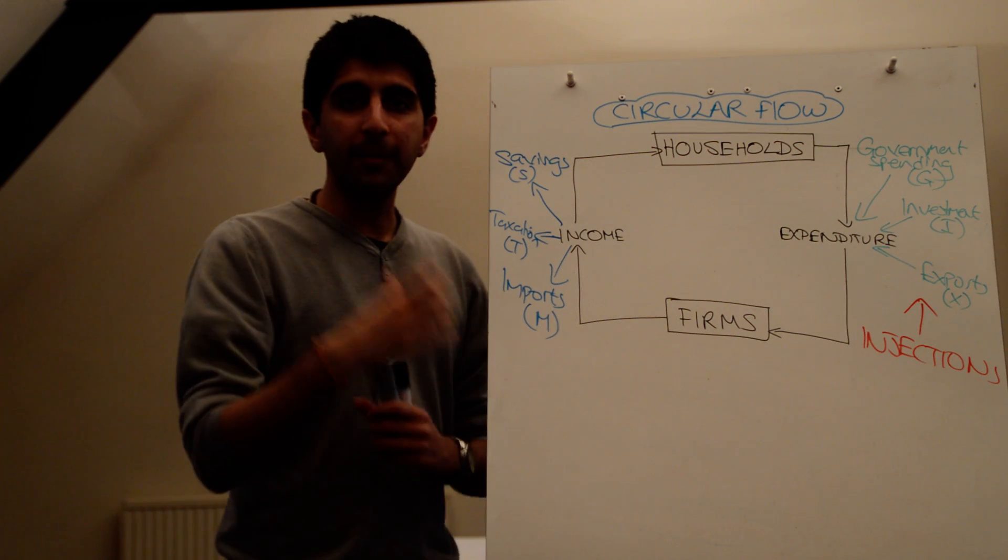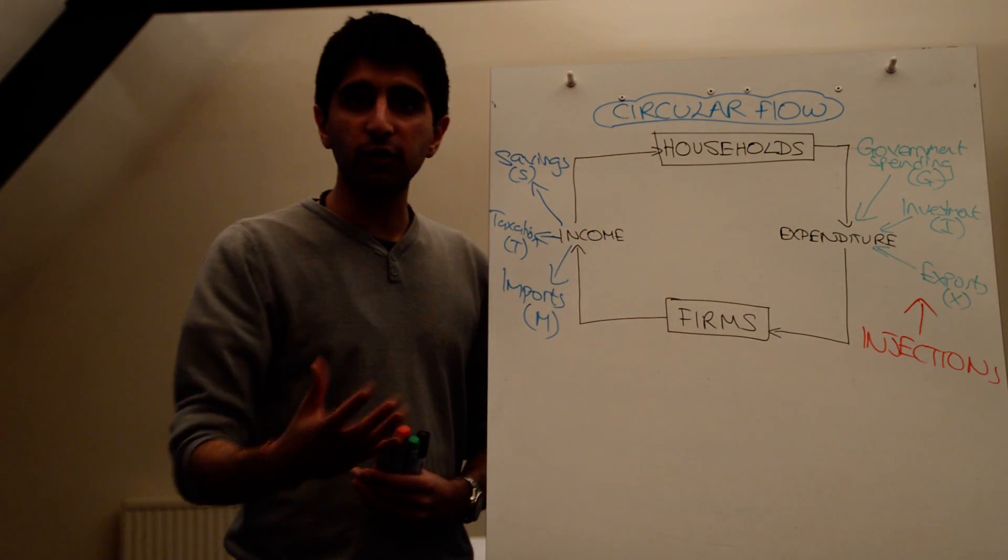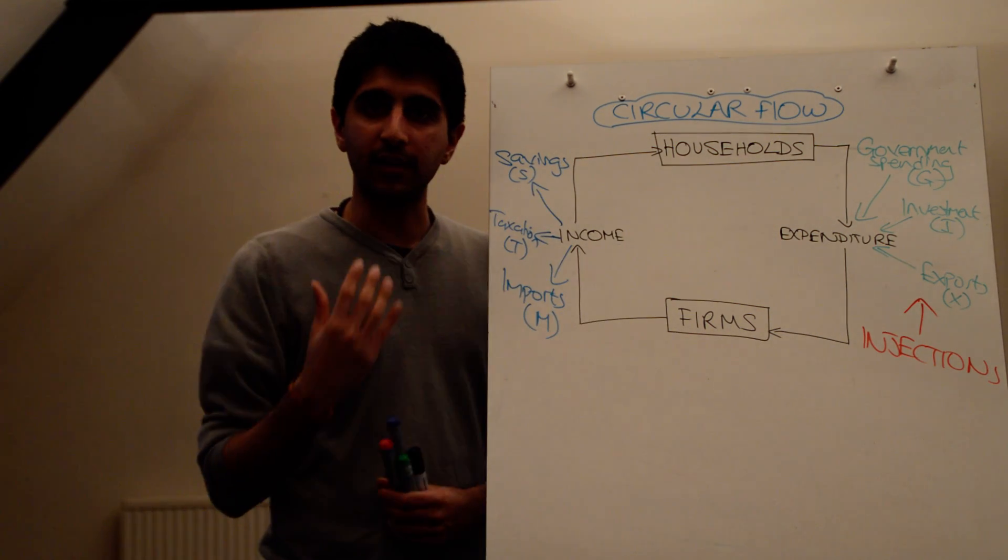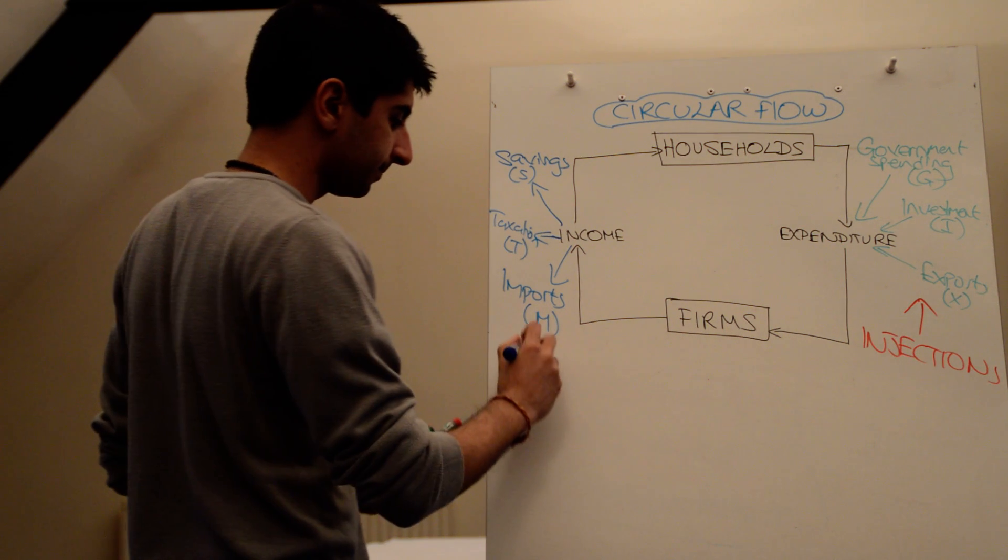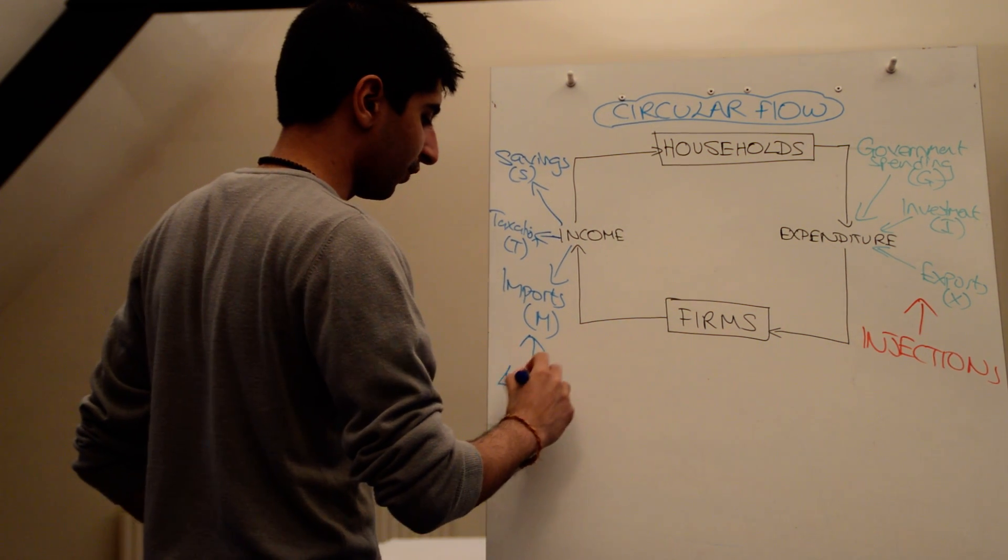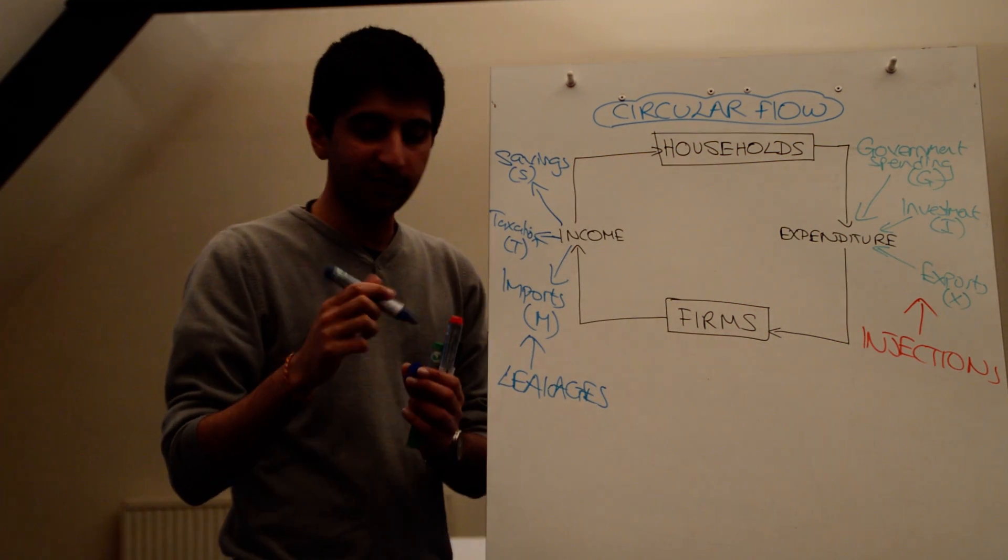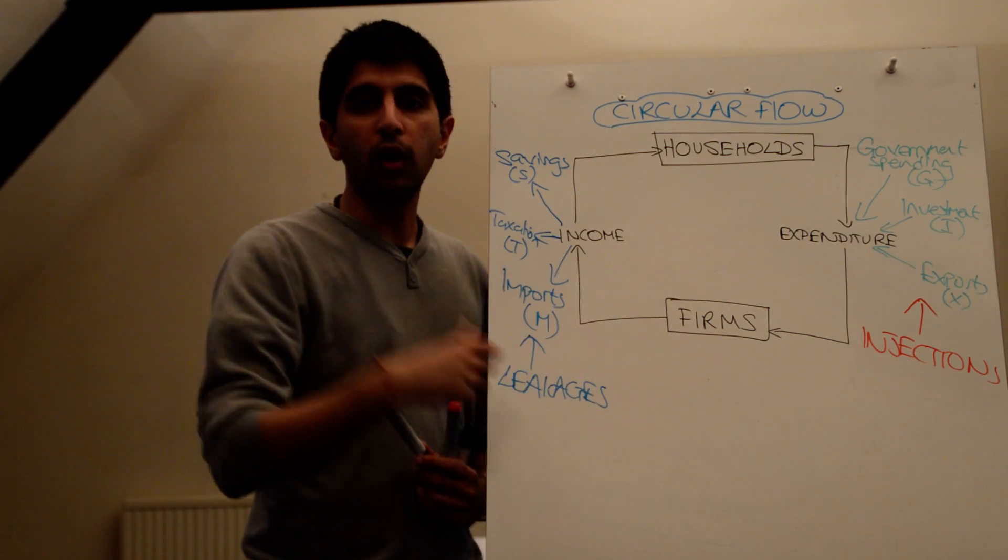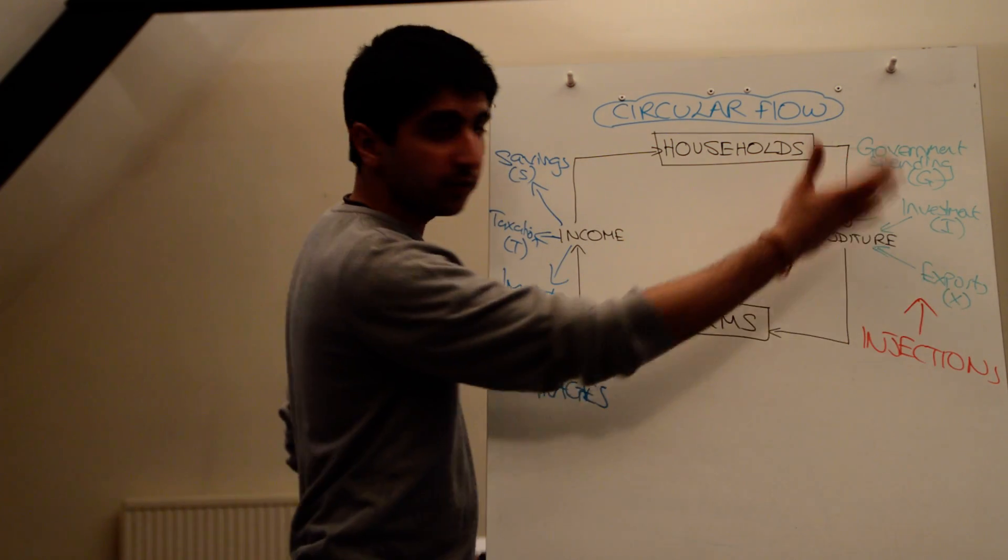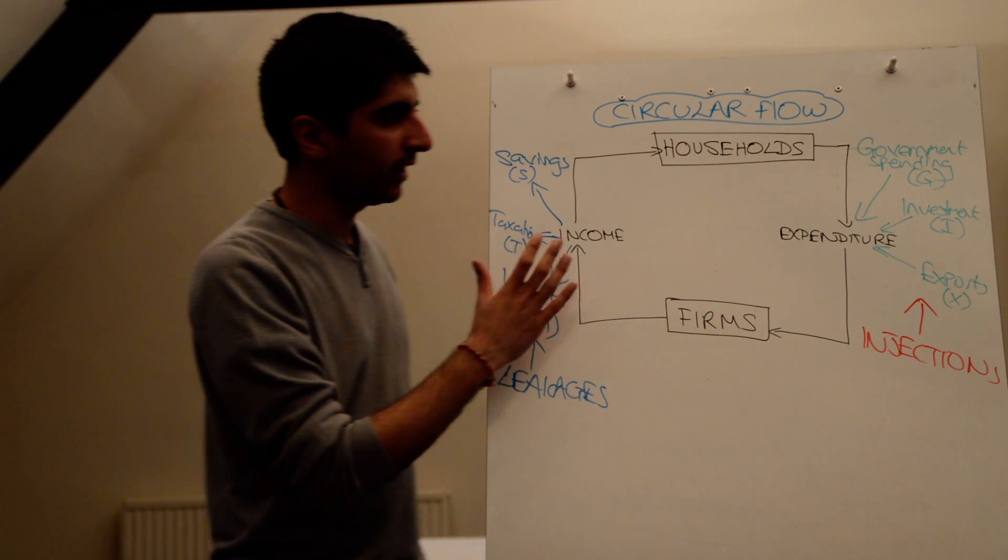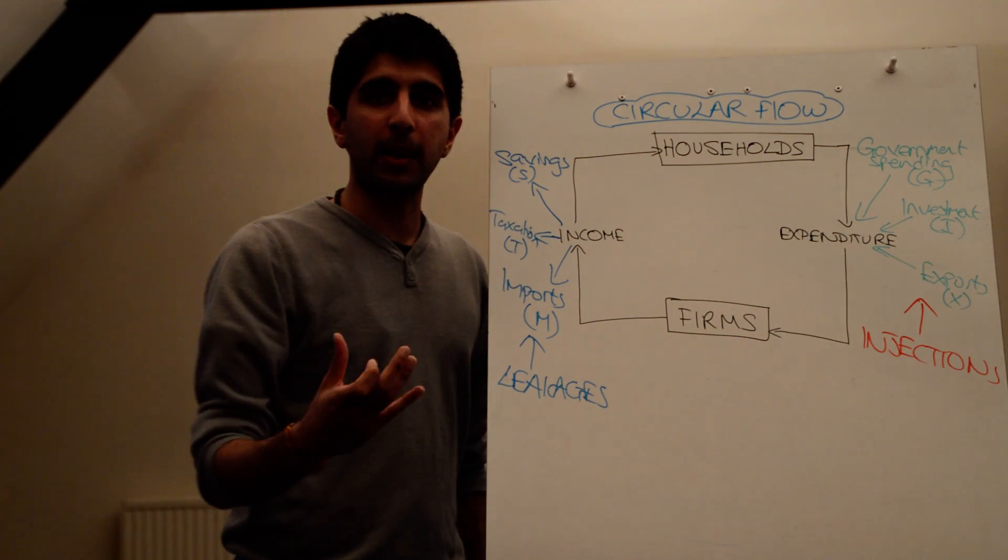And all of these three things, either money is leaving the country, leaving the circular flow, or it's just not been spent, in which case it exits the circular flow. So these things are all known as leakages from the circular flow, where money can leave the economy, leave this flow of income and spending. You need to know we've got injections, these are very important to understand, the leakages here, which are also on top of expenditure, consumer expenditure in the economy.